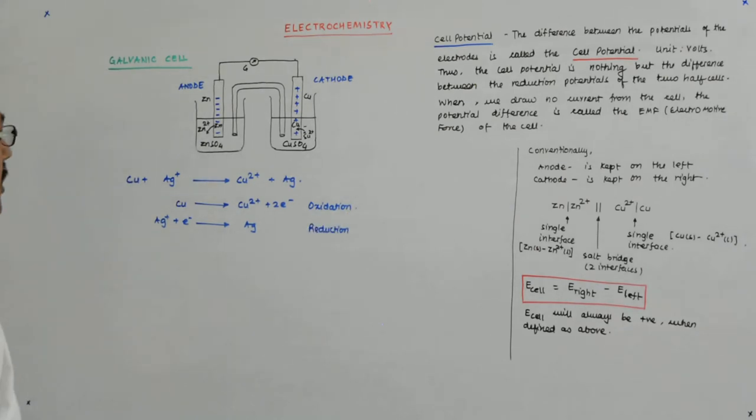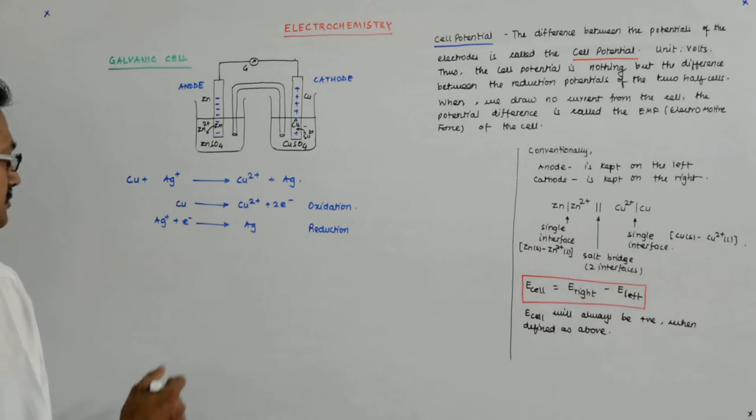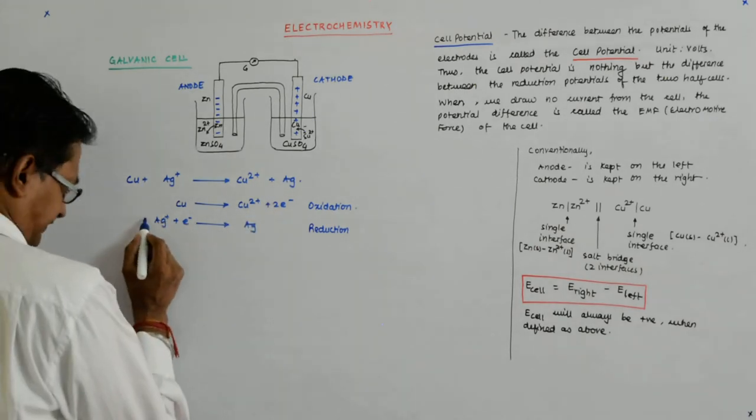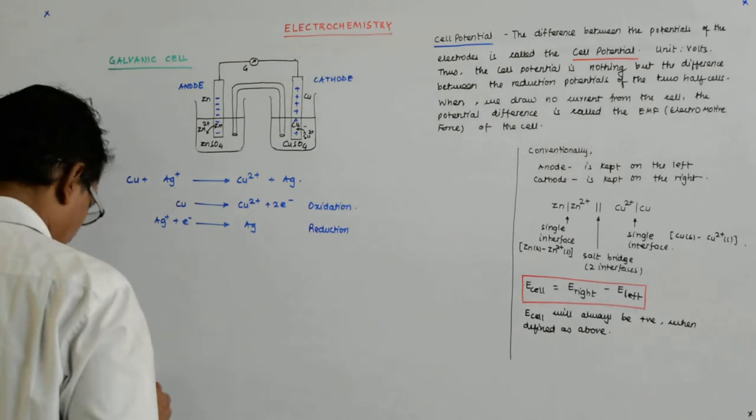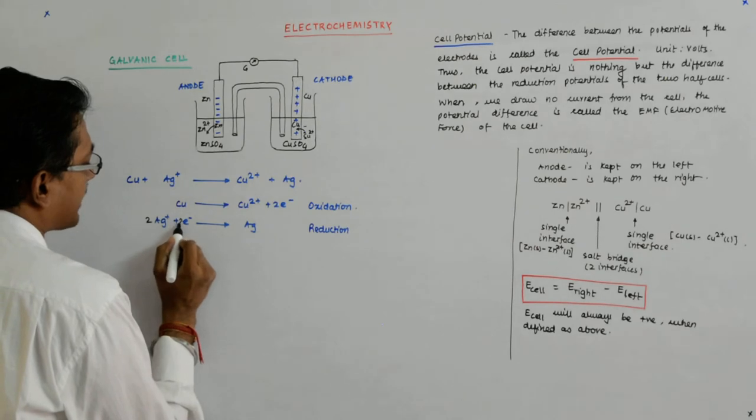Whatever gets oxidized we write to the left, whatever gets reduced we write to the right. How do I come to this equation?